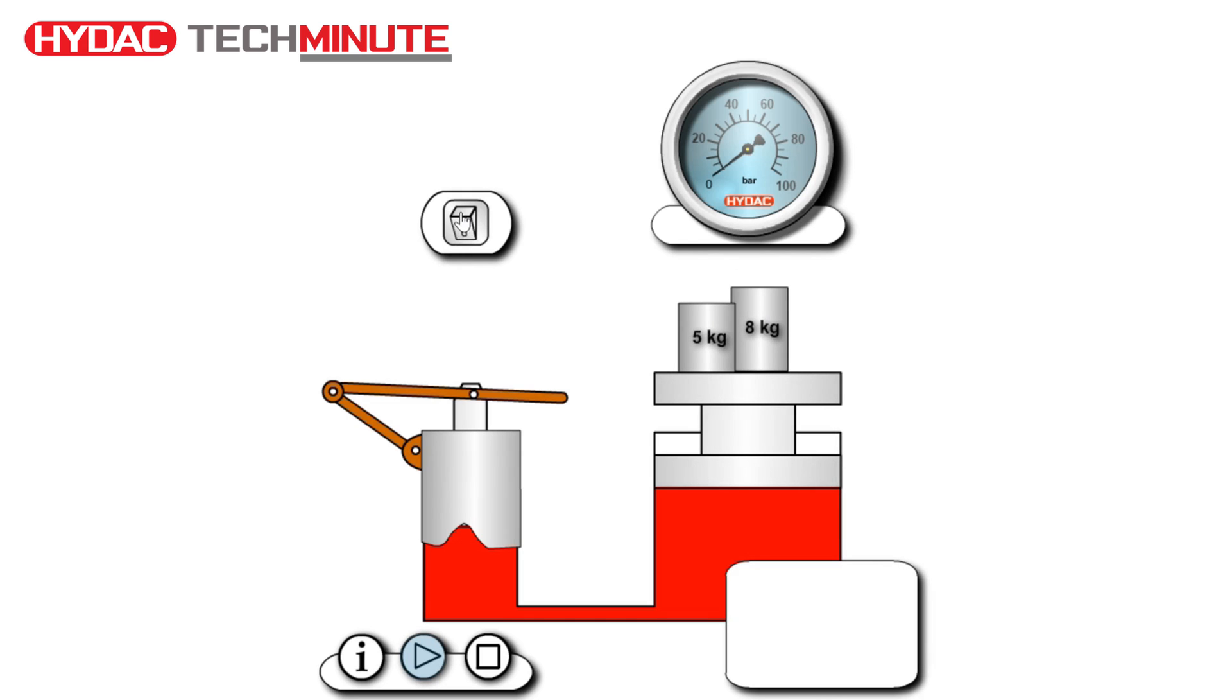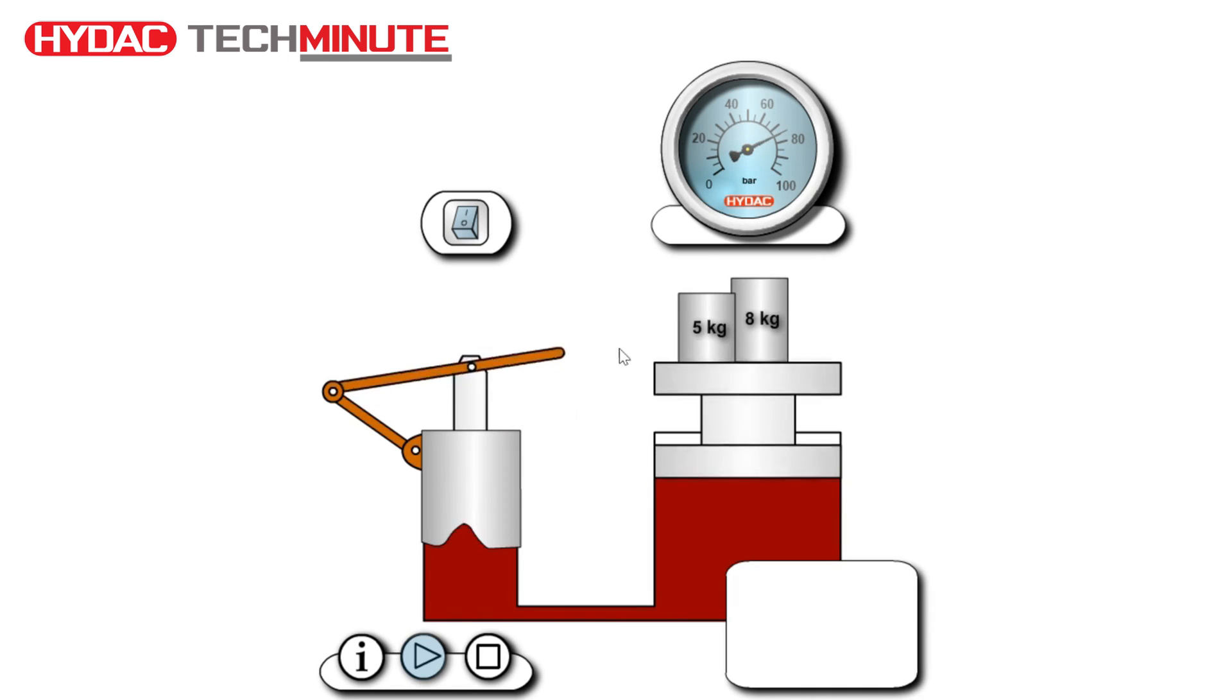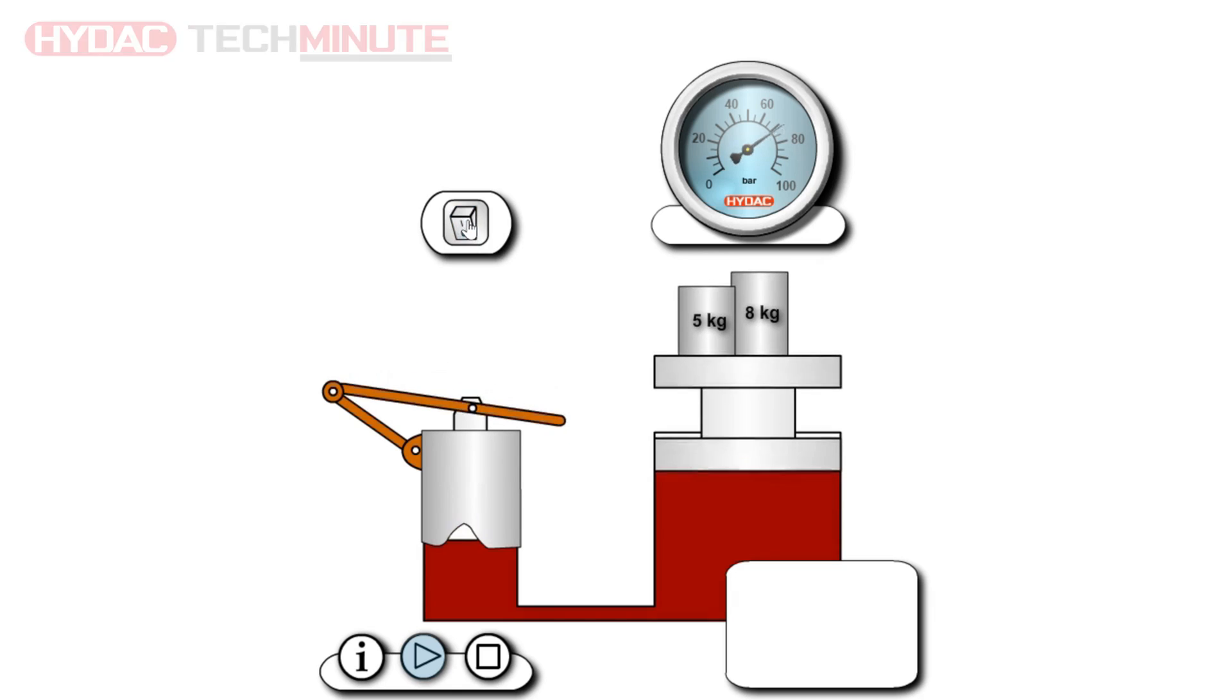What's going to happen is we're going to see a pressure being created as a resistance to flow, as a resistance to movement within the jack. Once we have sufficient pressure to overcome the load, we can begin to do some very heavy lifting.